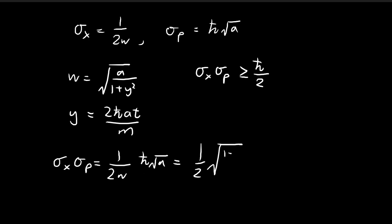Since this is 1 over w, the 1 plus y squared goes back up, and the a goes down to the denominator. Then we have ℏ square root of a. Obviously these cancel out, so we have the square root of 1 plus y squared divided by 2 times ℏ.